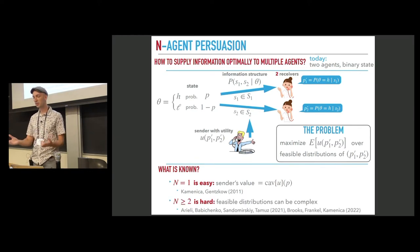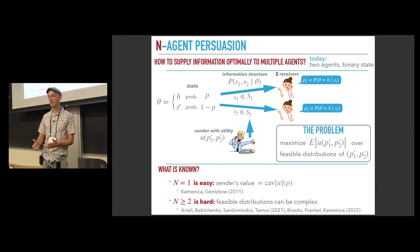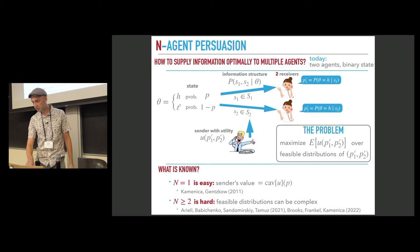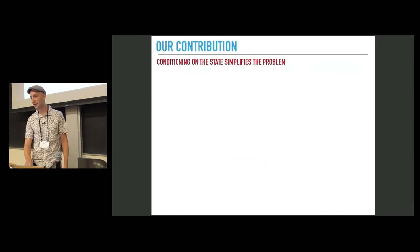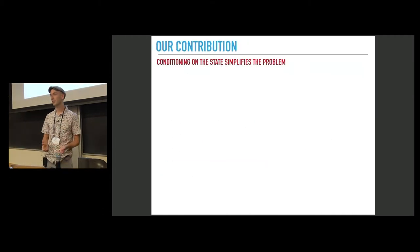When we have several receivers, the problem becomes hard and presumably it does not admit any closed form general solution. The underlying reason is that the set of feasible distributions becomes complex. There are some characterizations in the literature, but they are not very handy.